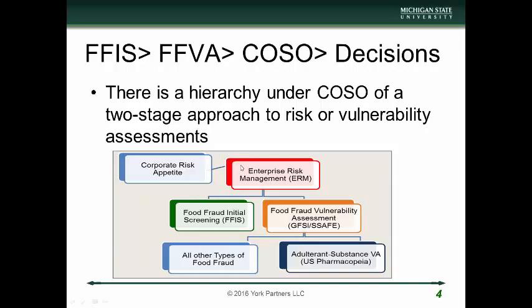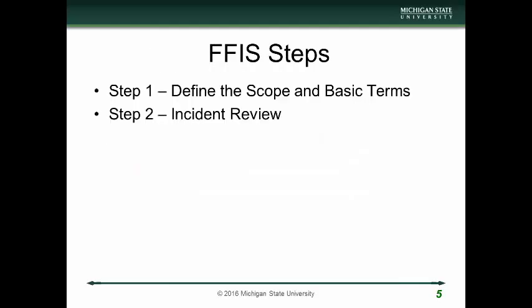Under that corporate risk appetite, it's managed through enterprise risk management across the entire corporation. For food fraud, there are two steps: the initial screening and the more detailed vulnerability assessment. Under the more detailed assessment, other activities are already developed — one is for adulterant substances, where the U.S. Pharmacopeia has a specific type of vulnerability assessment that would feed into the overall food fraud vulnerability assessment. Also, to holistically meet GFSI requirements, which align with laws such as the Food Safety Modernization Act, you must review all types of fraud incidents that could lead to a health hazard.